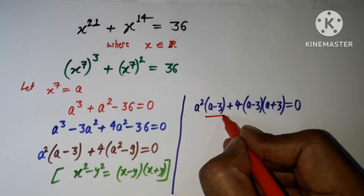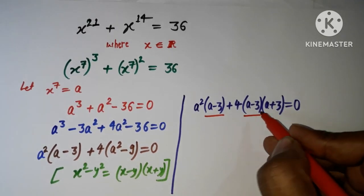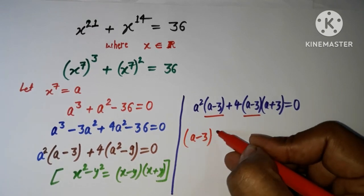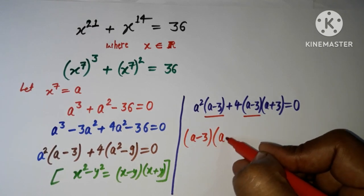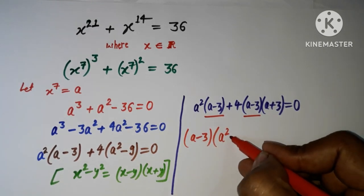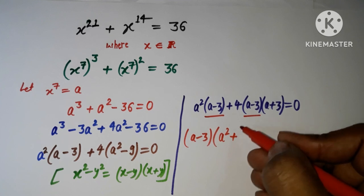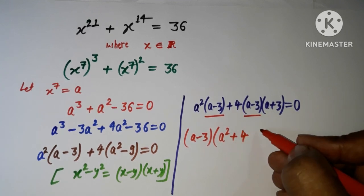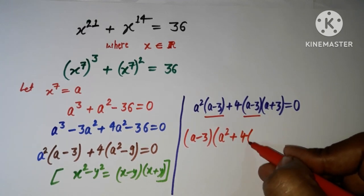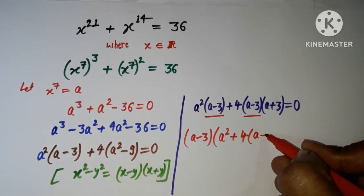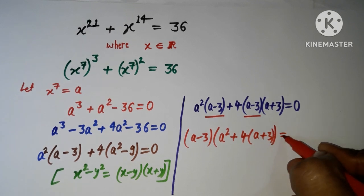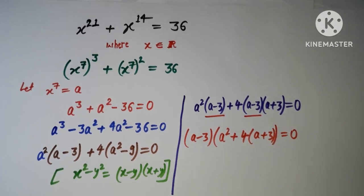Taking (a − 3) as a common factor, I get (a − 3) times (a² + 4(a + 3)) = 0, which simplifies to (a − 3)(a² + 4a + 12) = 0.